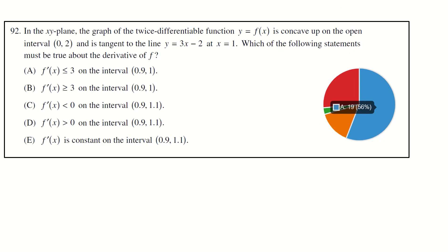In the xy plane, the graph of a twice differentiable function is concave upwards on the open interval 0 to 2. The tangent line at x equals 1 has slope 3. Concave upward means f double prime is positive. f double prime positive means f prime is increasing.